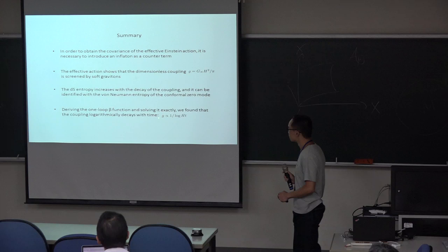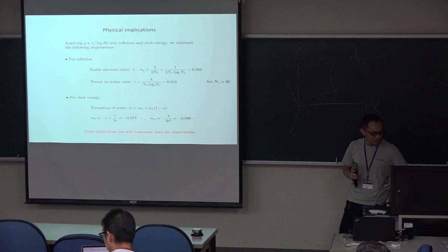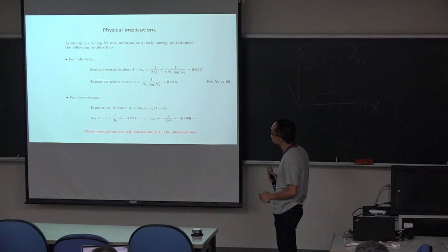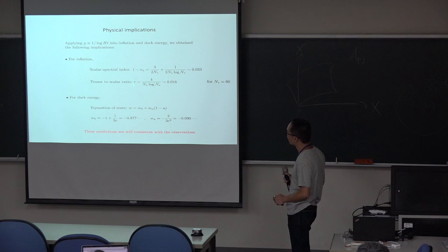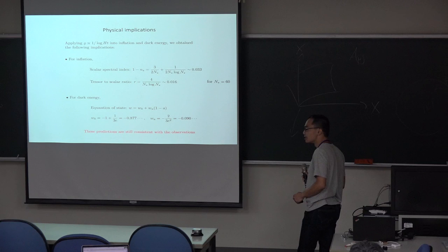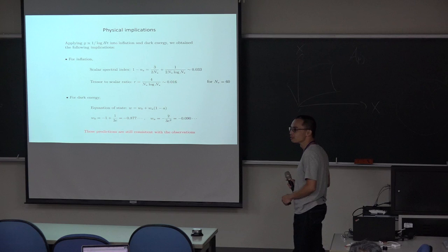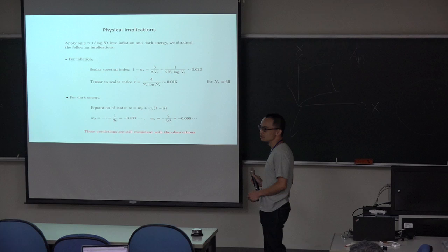I still have time, so I want to mention the physical implication of our results. So applying the global time evolution, we predict the value of the spectral index for inflation. And for dark energy, we predict the deformation from the pure cosmological constant. I don't have time to explain the details, but the important point is that these predictions are still consistent with the observation. All the predictions are testable. These are our results. That is all. Thank you.